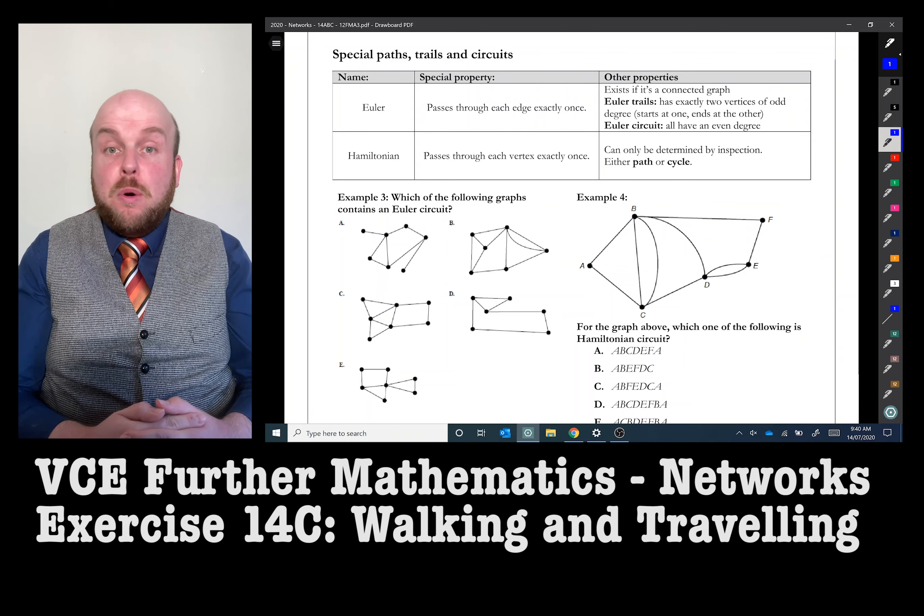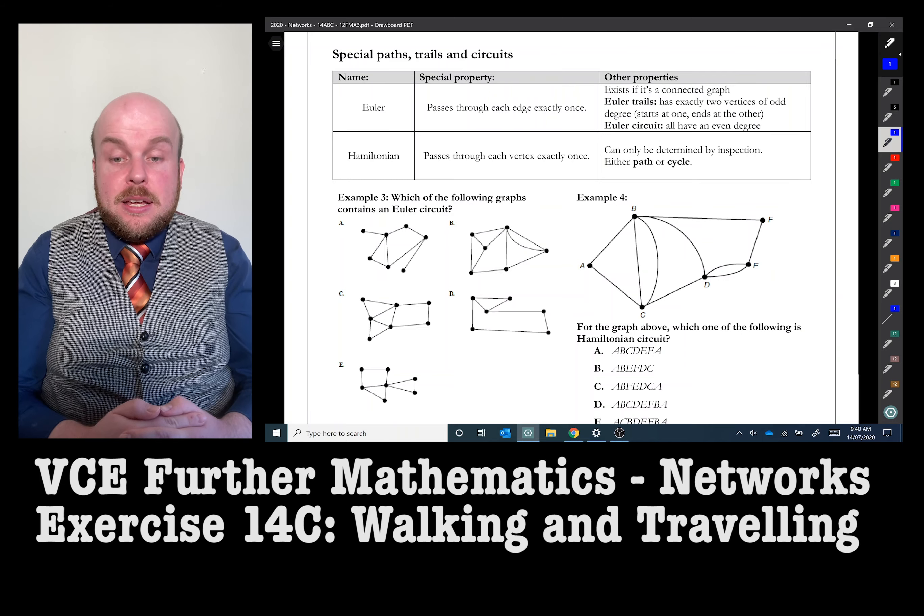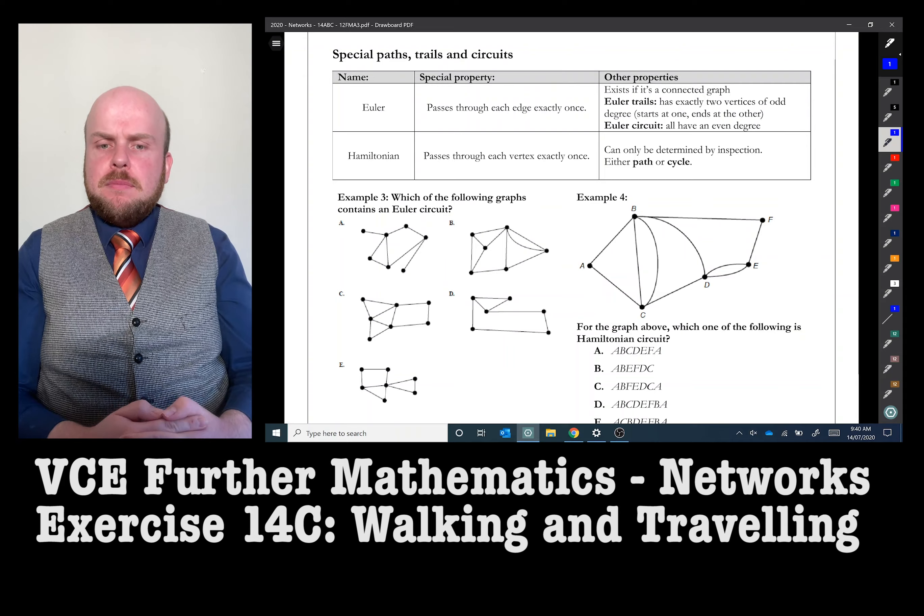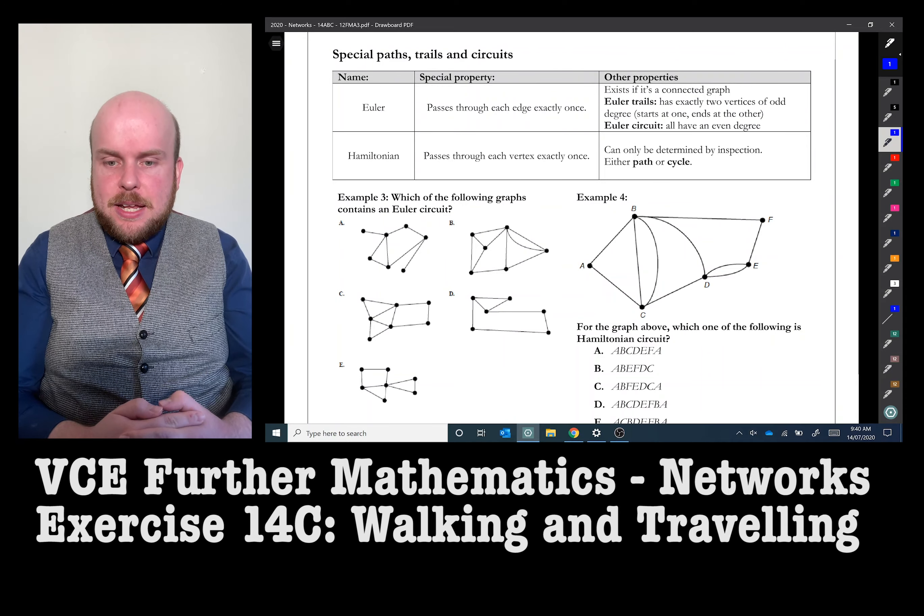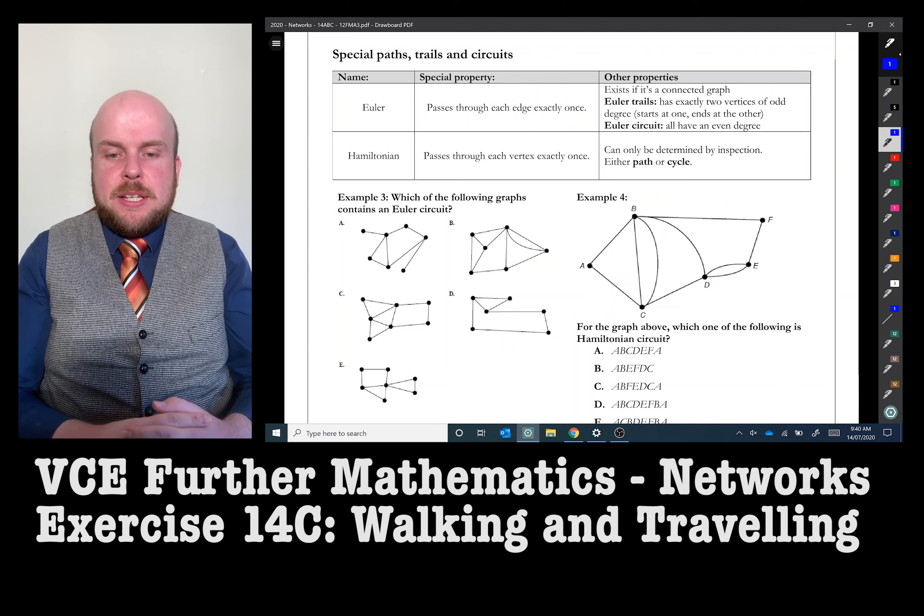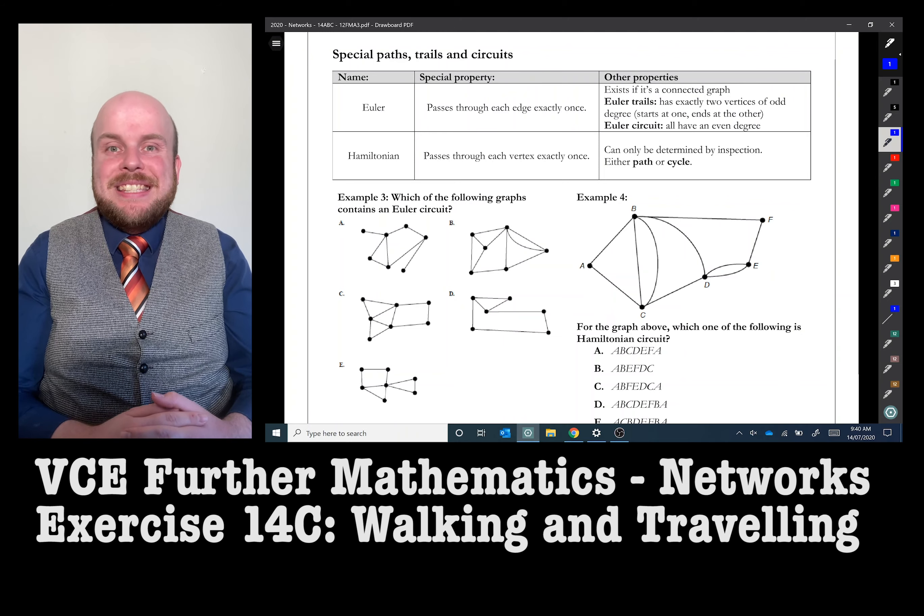So for example, an Euler trail has exactly two vertices of odd degree. They start somewhere and end at the other. And an Euler circuit, they all have an even degree. Unfortunately, there's no such easy way with Hamiltonian ones. You just have to determine it by inspection.